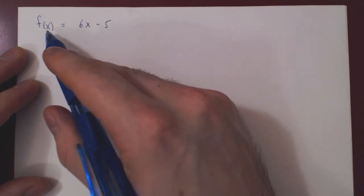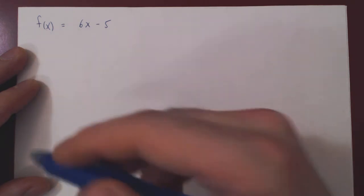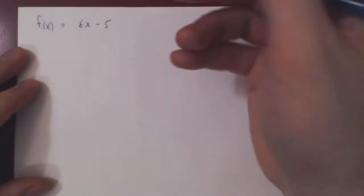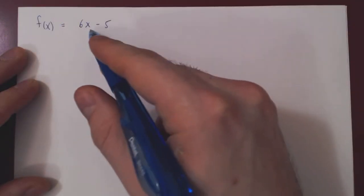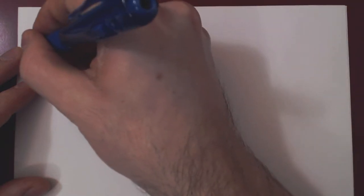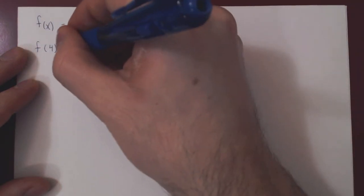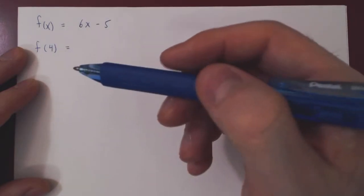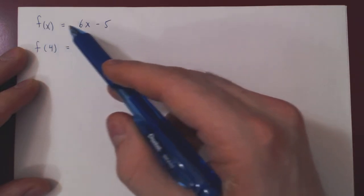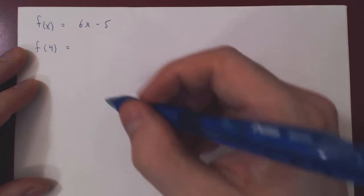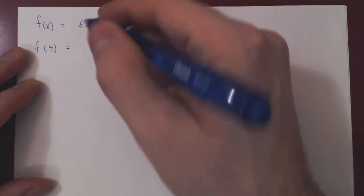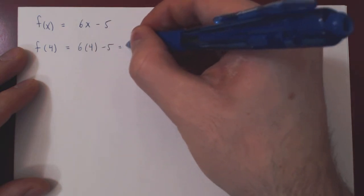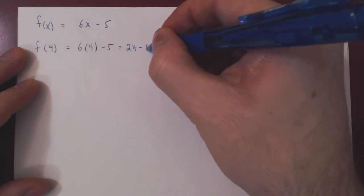The idea is, because x is a variable, it can be replaced by any other variable, or even a real number. So we could say, if f of x is 6 times x minus 5, well, f of 4 would be — we are changing the argument, making a substitution. We are replacing the argument x by the value 4, so we replace everywhere x by 4. So we get 6 times 4 minus 5, which gives us 24 minus 5, which gives us 19.